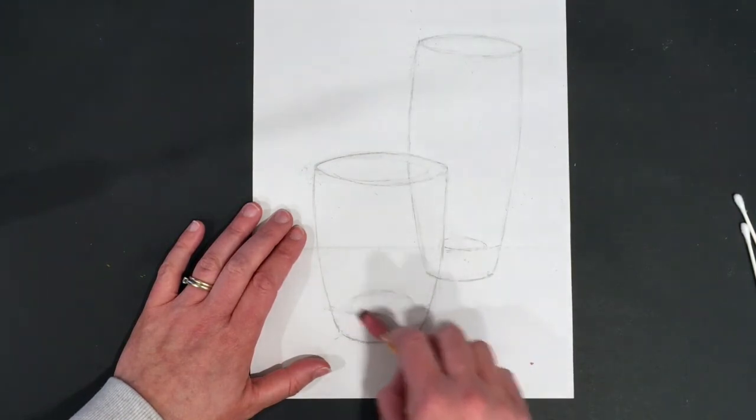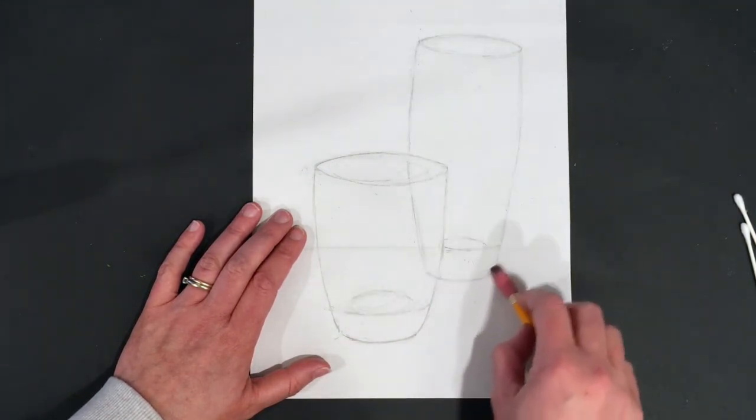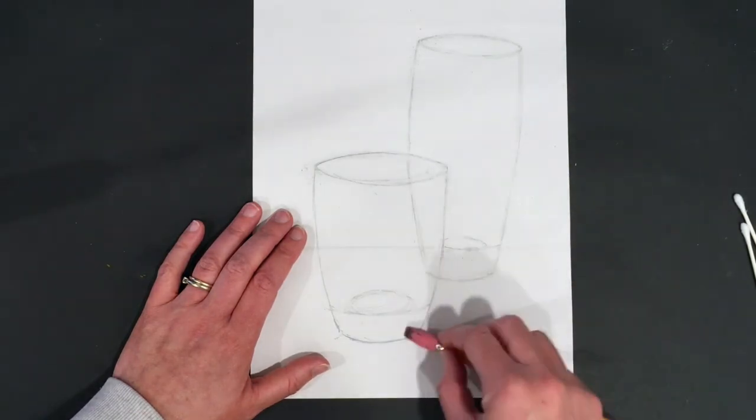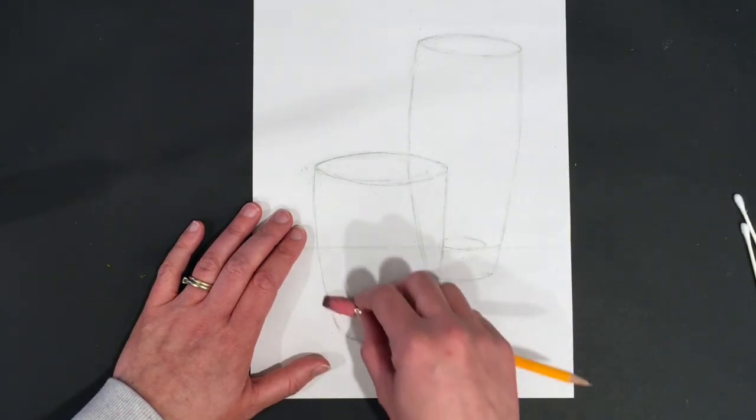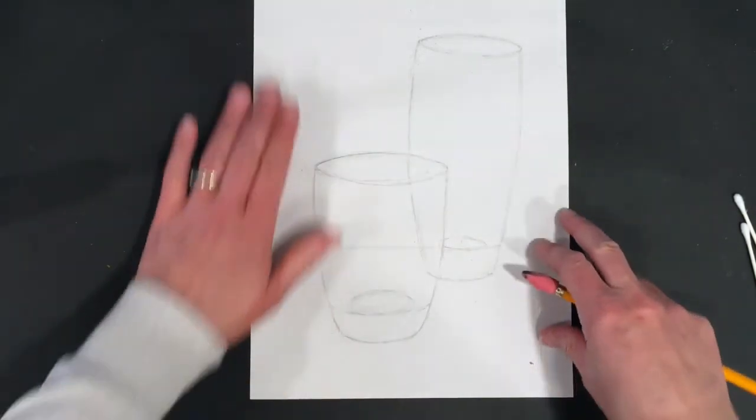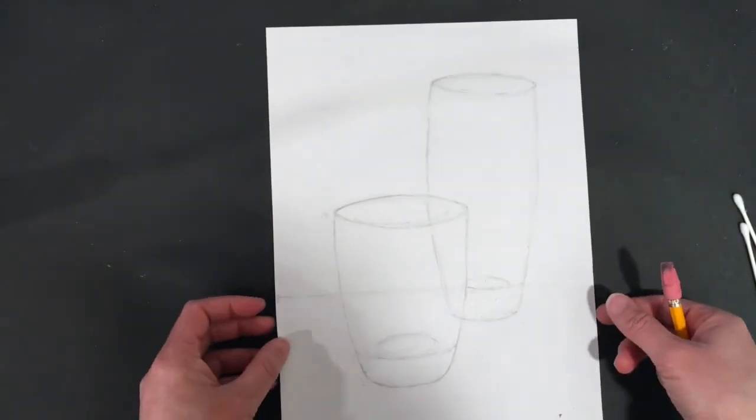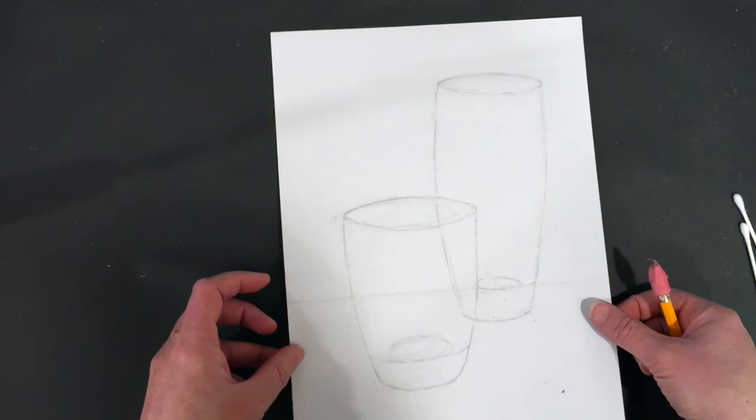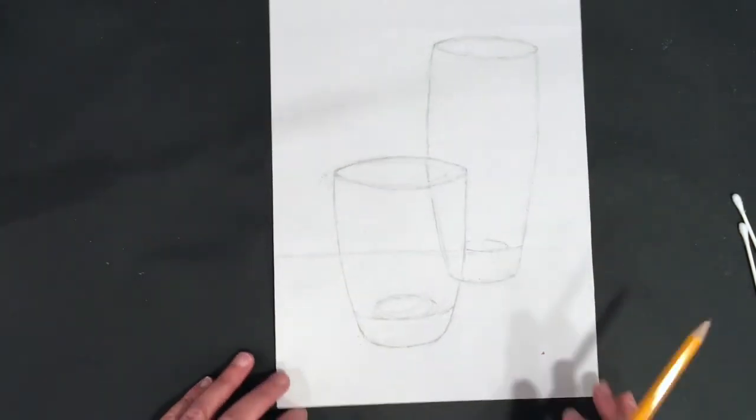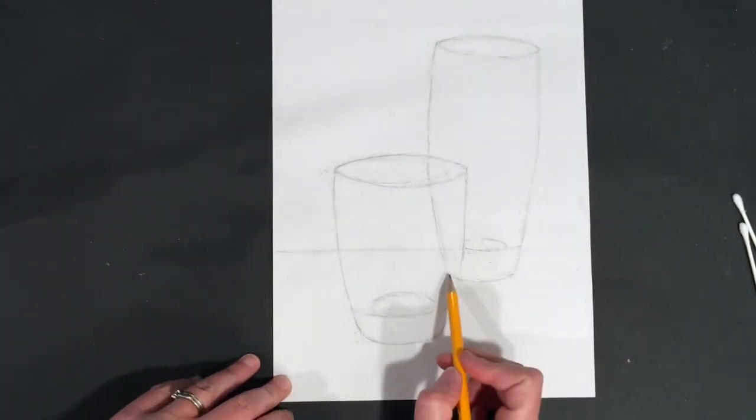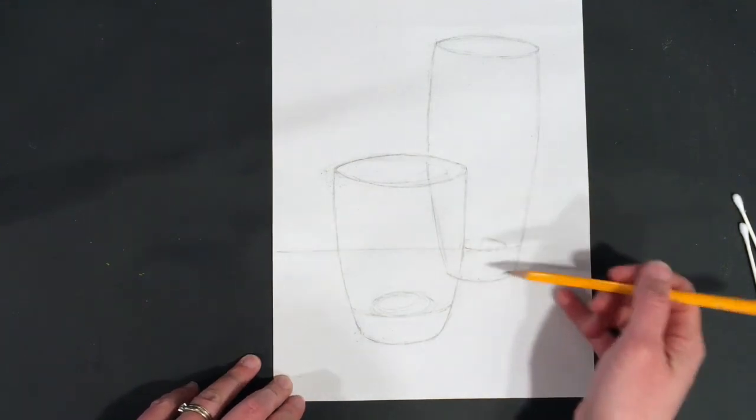But if you don't have a kneaded eraser at home, this works just as well. You just take your eraser, whatever you've got, chunk eraser, cap eraser like this. I just want you to gently, gently, gently run it over top of your glass lines. Okay, that looks pretty good so far.